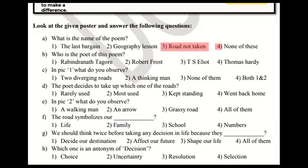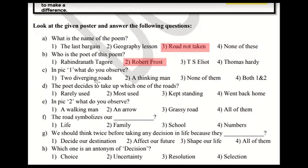Who is the poet of this poem? I have told you many times in the description — the poet of this poem is Robert Frost. Remember this name well, because in 10th grade also this poet has a poem and he is a very famous poet. In pick 1, what do you observe? Option 1: two diverging roads. Option 2: a thinking man. Option 3: none of them. Option 4: both one and two. Option 4 is the correct answer because both two diverging roads and a thinking man are visible in pick 1.